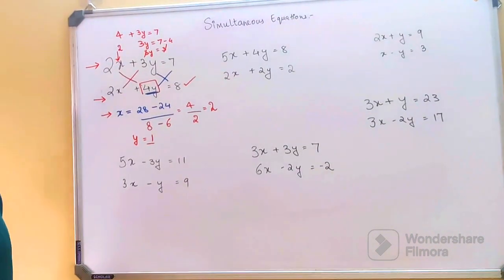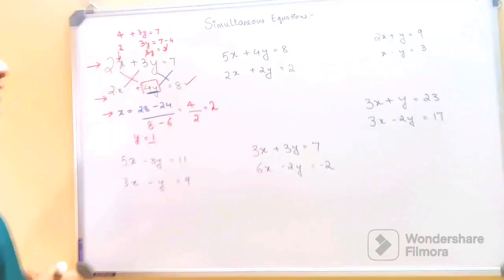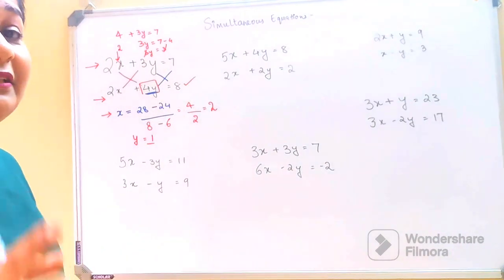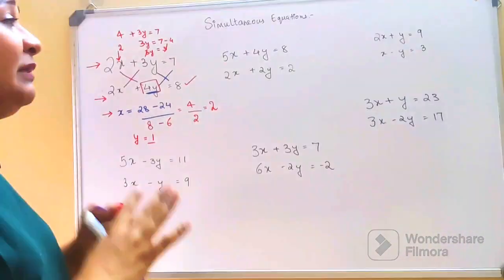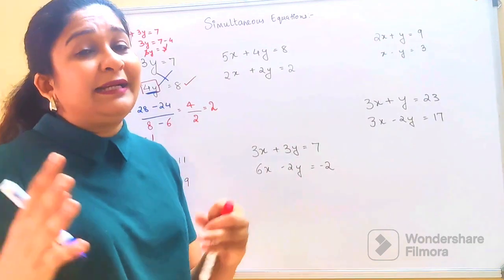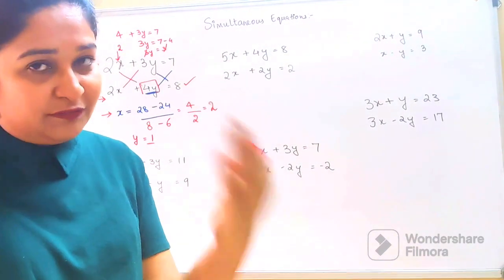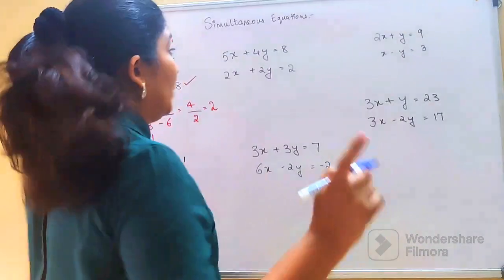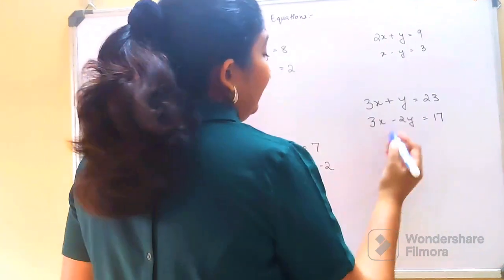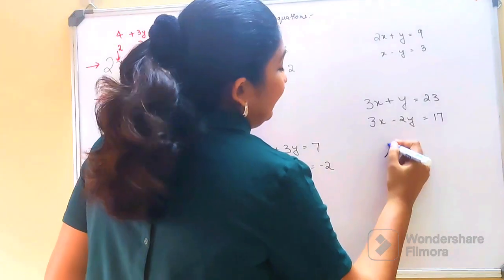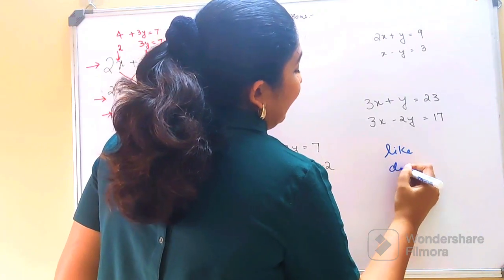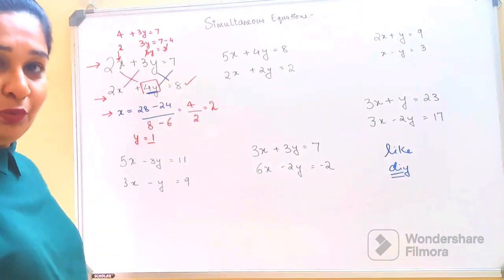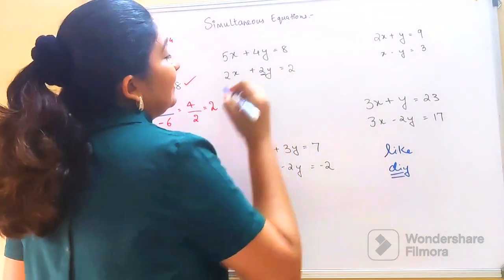Both values are absolutely correct. Now we'll do one more of this type, but here you might get an answer as a negative number. In simultaneous equations you can get answers as positive or negative integers, or sometimes even fractions — we'll cover that scenario as well. Before going ahead, please hit the like button, and at the end I'll put up a DIY question for you to solve.